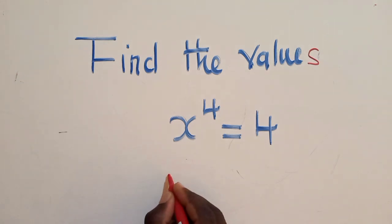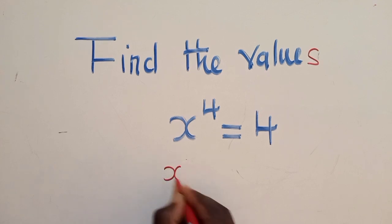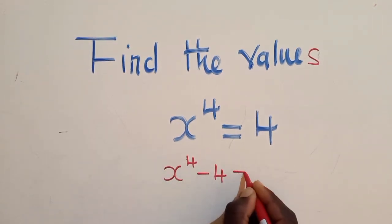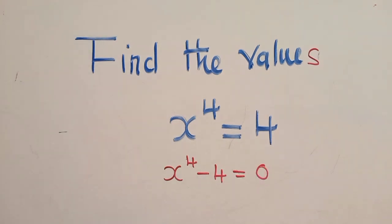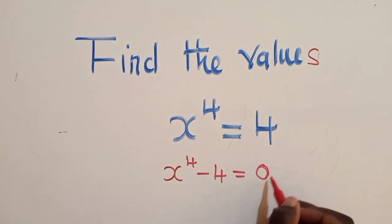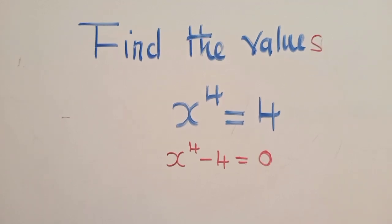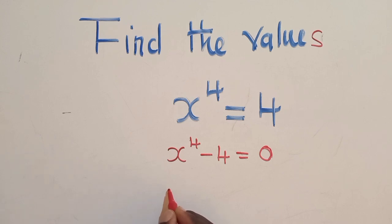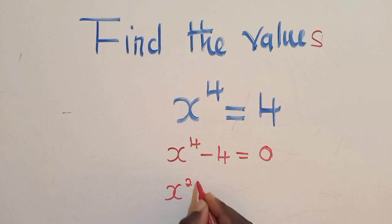So how do we get to find the values of x? The first thing that we must do here is to put this polynomial in standard form. You can see we have put the polynomial in standard form, where a 0 must appear to one side. So after putting it in standard form...